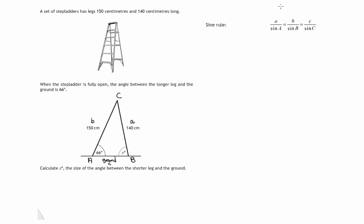Now, what do we know? We know little a — it's 140. We know angle A is 66 degrees. So we know this side and angle pair. We know little b, side B, and we're trying to find angle B. We have nothing to do with the ground side — that's side c and angle C.